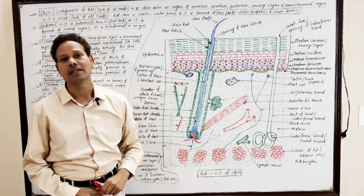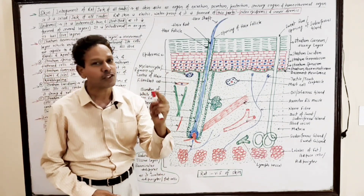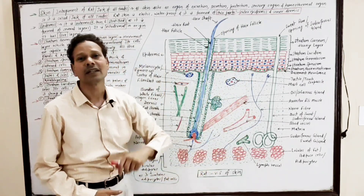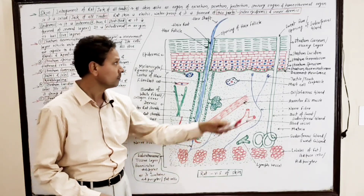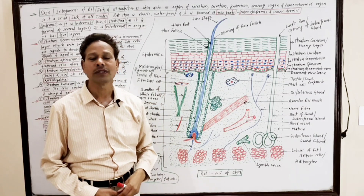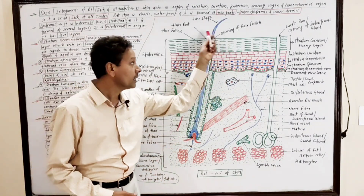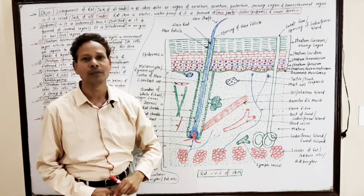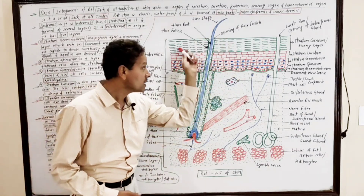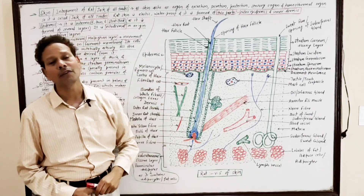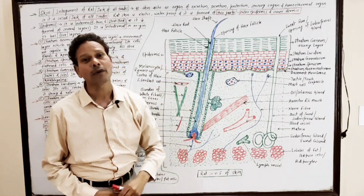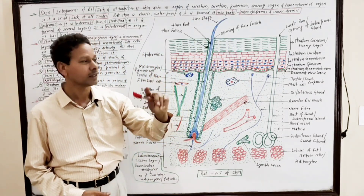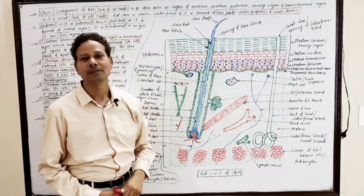In the case of rats and mammals, this integument has two regions: the outer thin region is the epidermis, and the inner thick region is the dermis. The epidermis is the outermost thin layer, ectodermal in origin because it is derived from embryonic ectoderm, and it is stratified because it consists of several layers. In the case of rats, the epidermis has five layers.